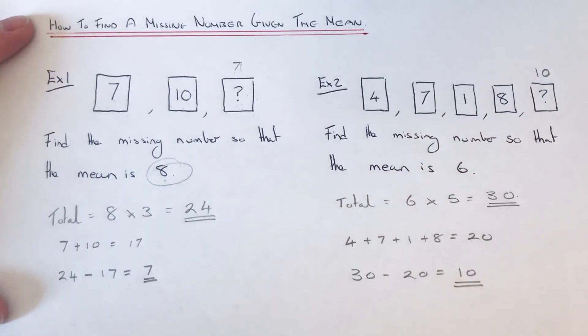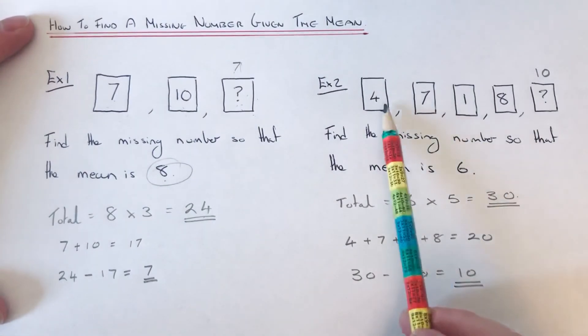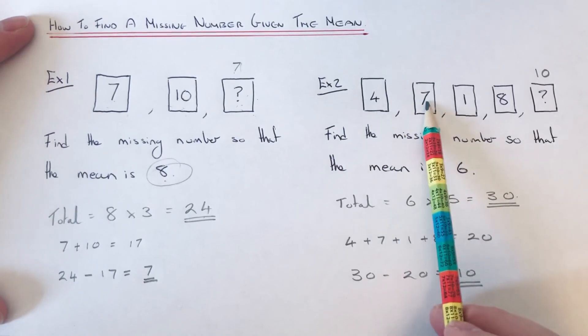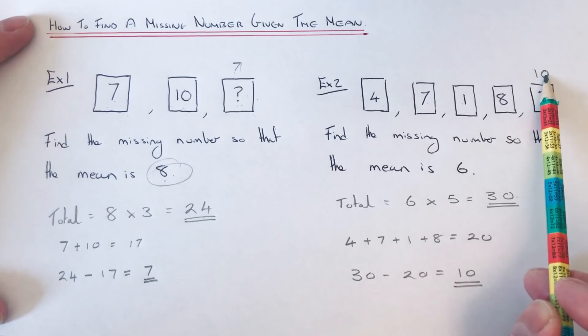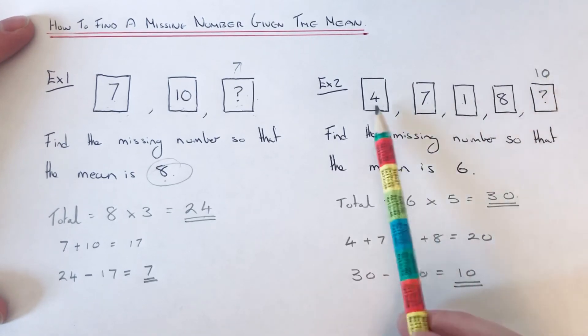Let's check this to see if it's correct. If we add the numbers up: 4 add 7 is 11, add 1 is 12, add 8 is 20, add 10 is 30. And if we divide that by 5 that gives a mean of 6.